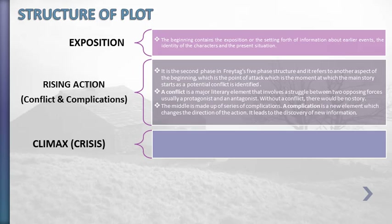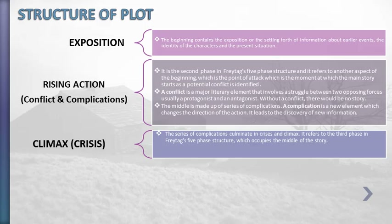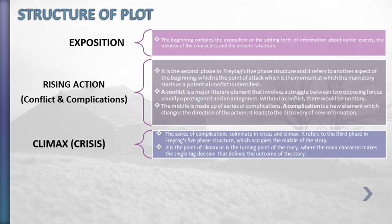After finding the witness, you will reach the climax, because finding the witness means we can find the murderer. The climax can also be called the crisis or turning point. It refers to the third phase in Freytag's five-phase structure, which occupies the middle of the story. It is the turning point where the main character makes the single big decision that defines the outcome of the story. In our case, the investigator uncovers the identity of the murderer with the help of the witness.